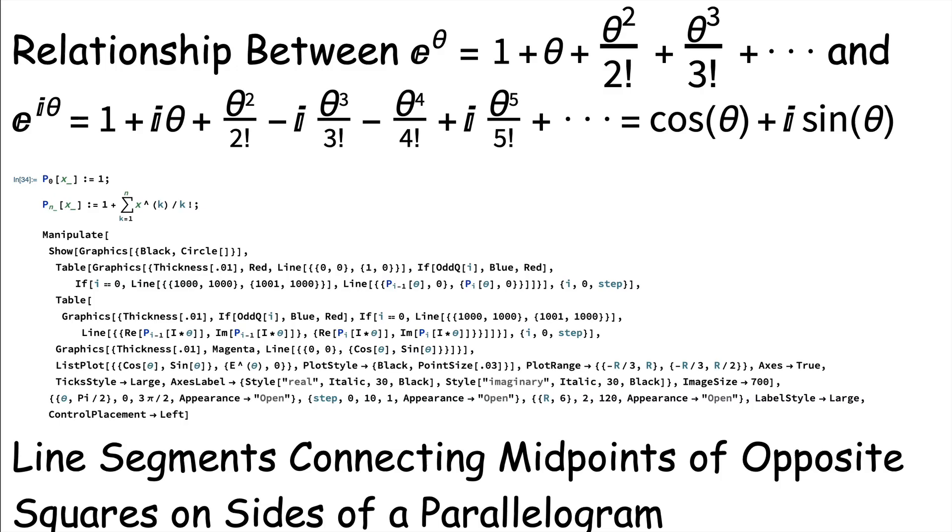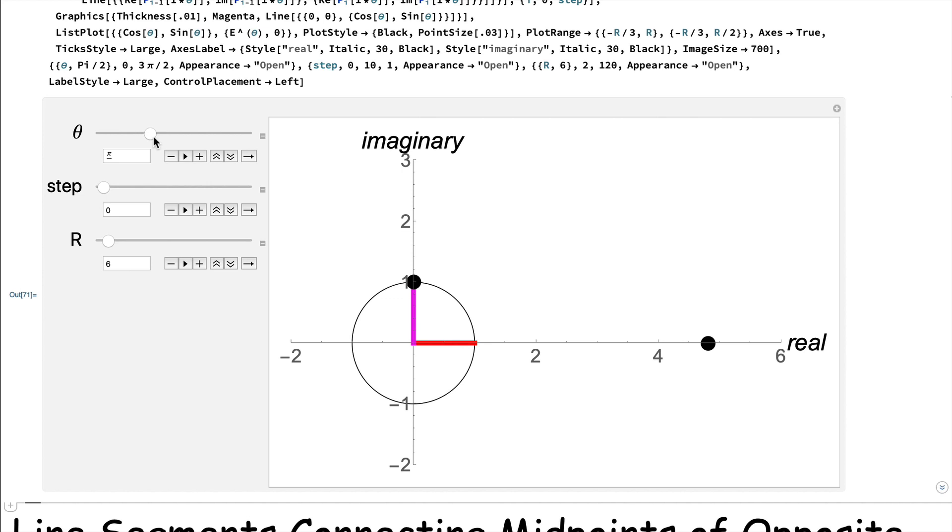This code here illustrates the derivation in terms of power series of Euler's formula that we saw in the book. If I enter it, I get this kind of picture.